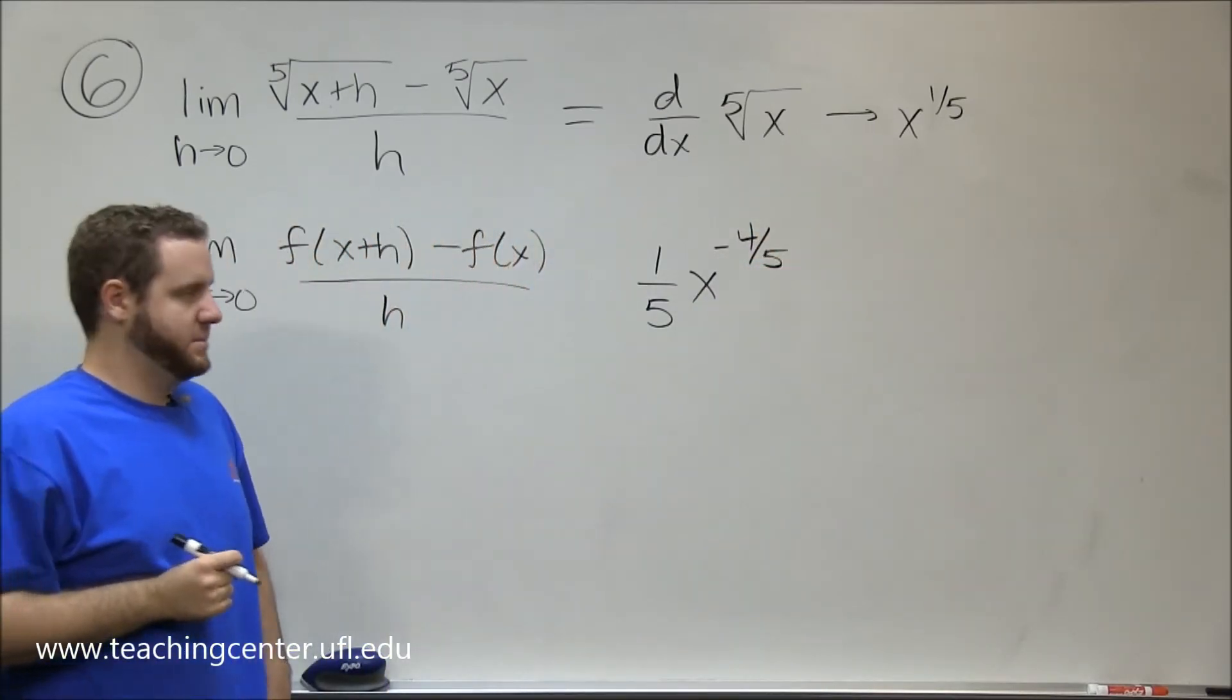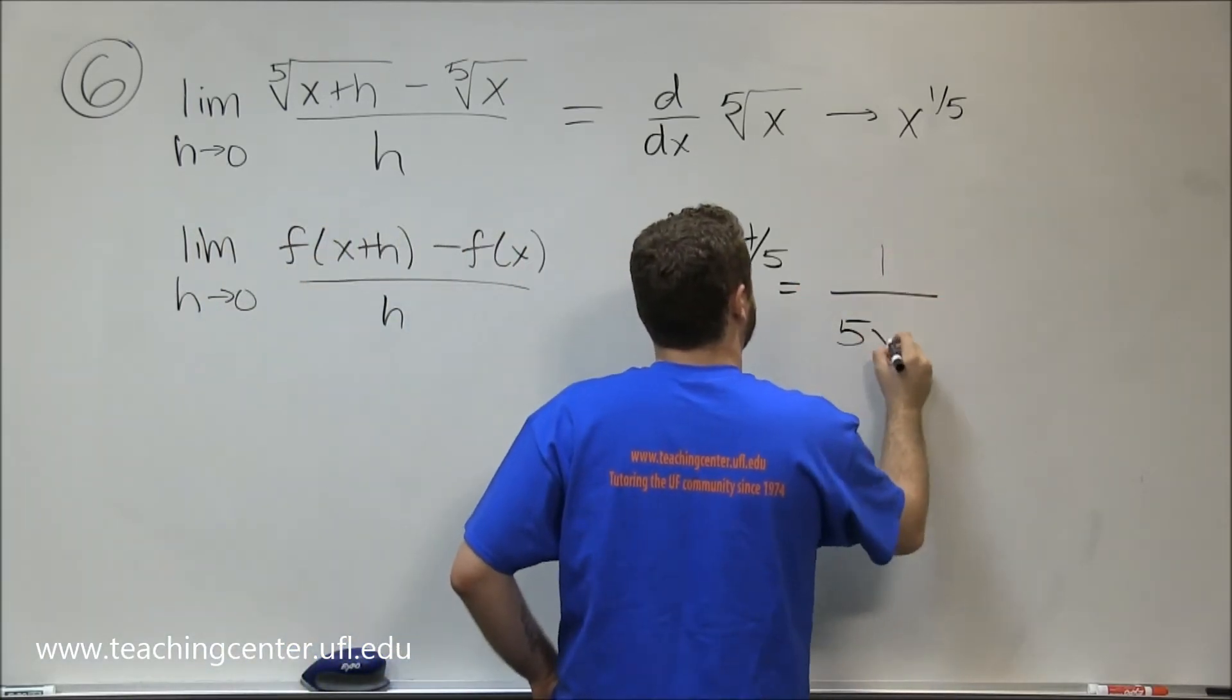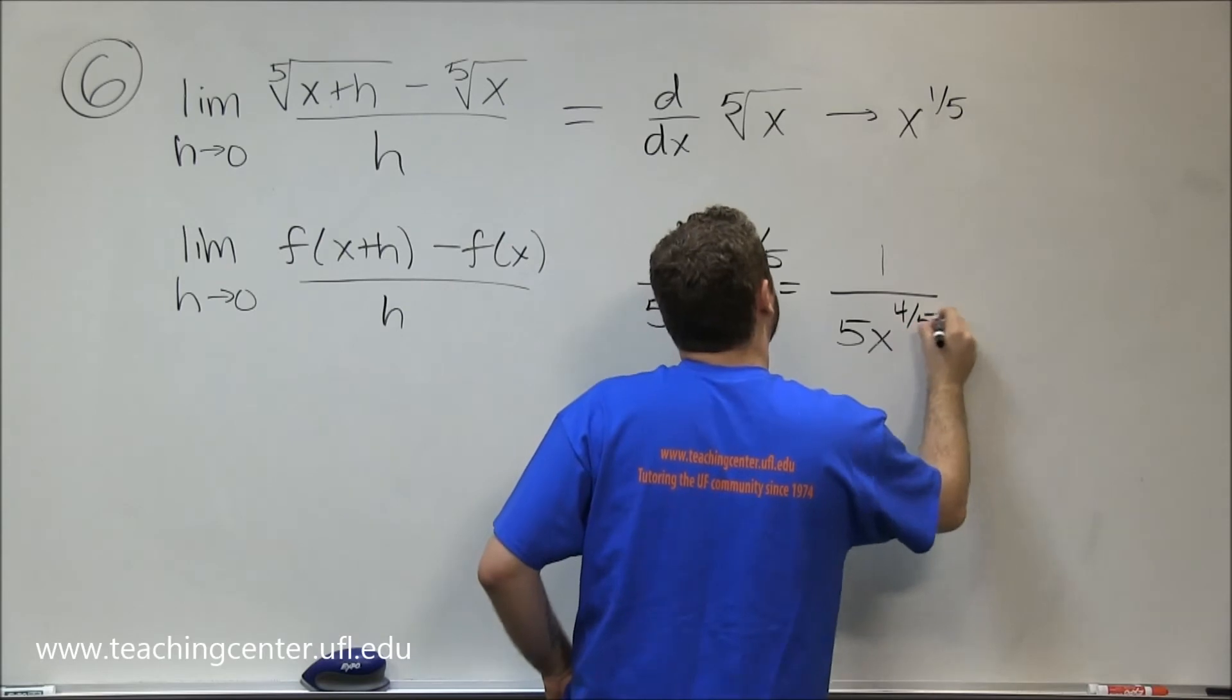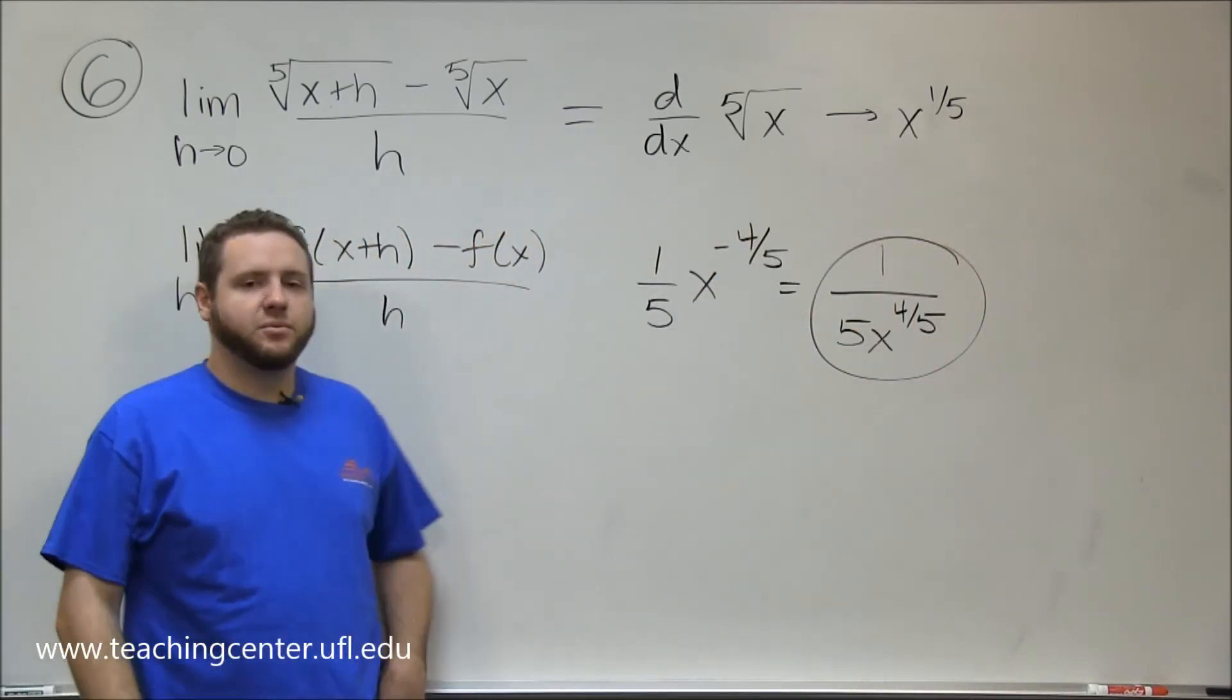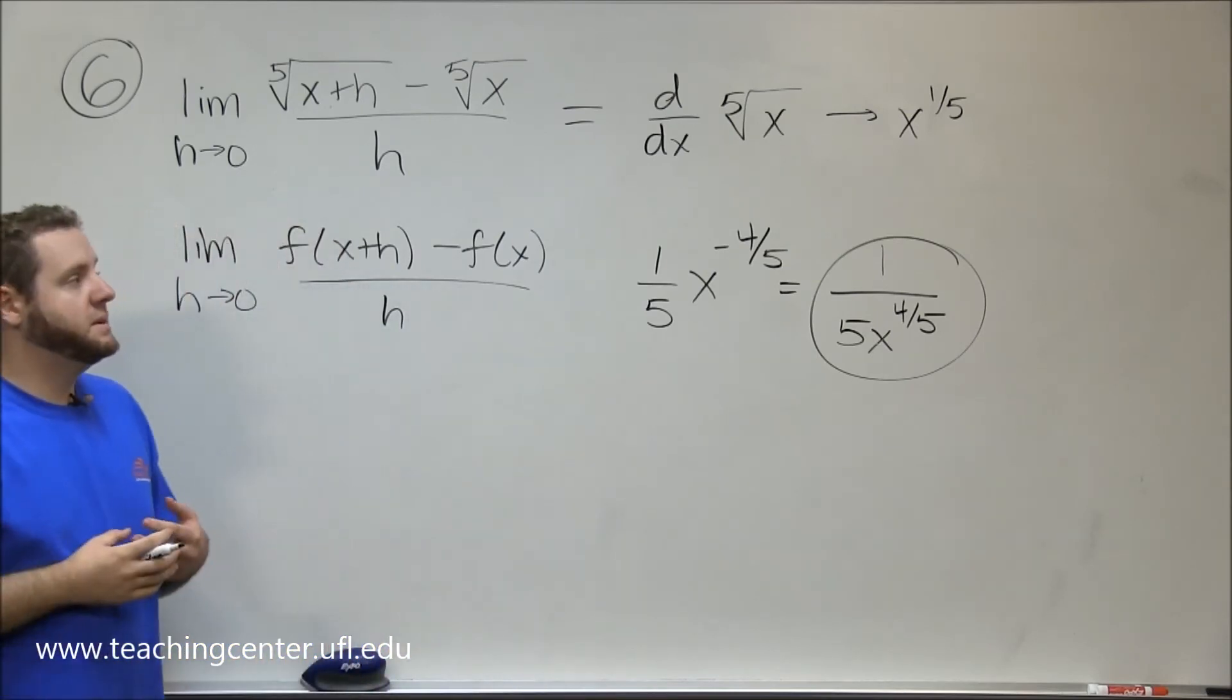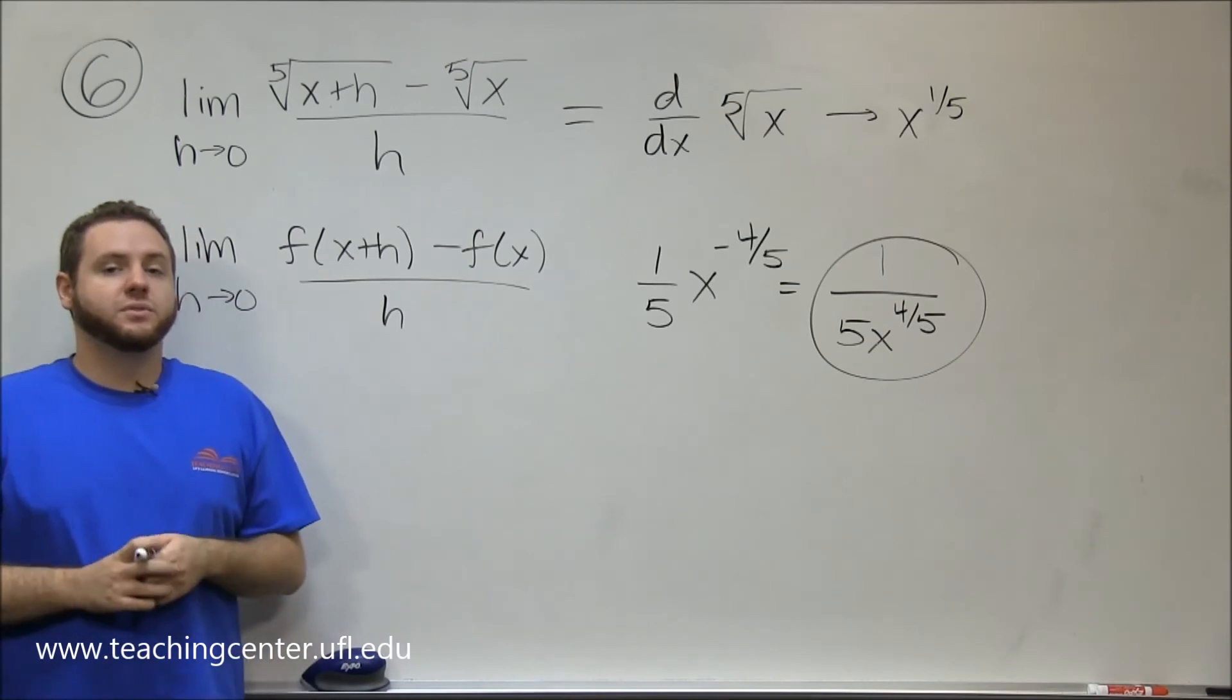And we can write that a little bit simpler and bring the negative power down to the denominator and write it as one over five times x to the four-fifths. So that's the derivative of x to the one-fifth, and that's actually just what this limit was asking us to do in the first place.